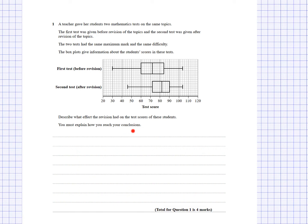Finally, I need to make a conclusion - that covers the first three marks. For the fourth mark, I can either say students on average performed better after revision, based on the medians. Or, using the range or interquartile range conclusion, I can say the students performed more consistently after revision than before. There are two conclusions I can state.